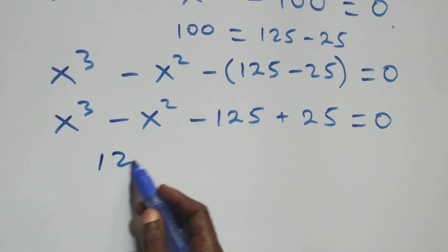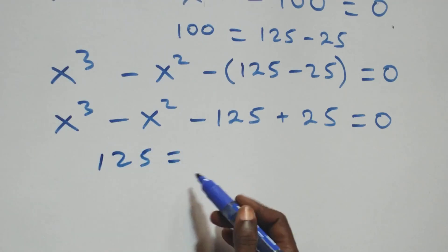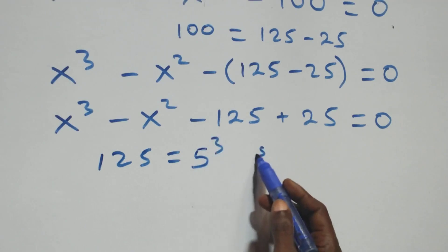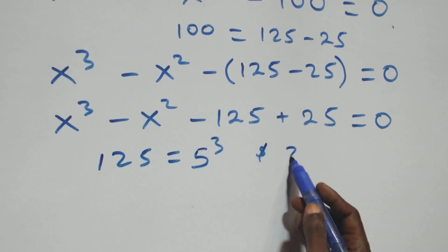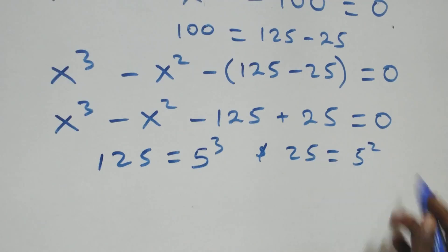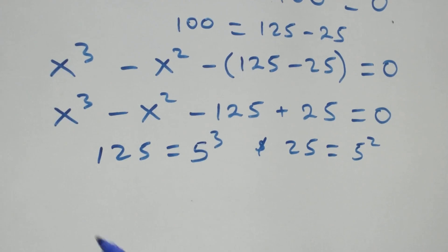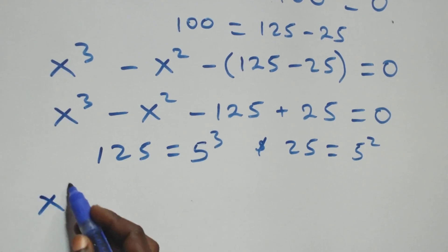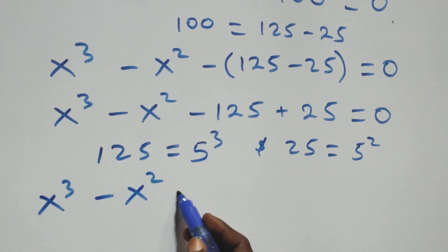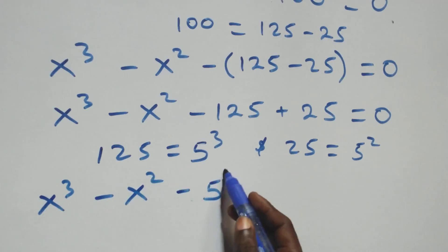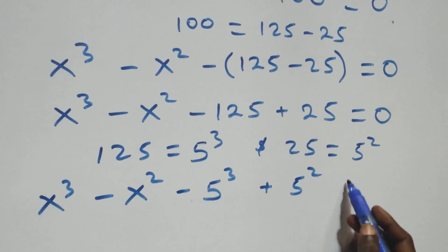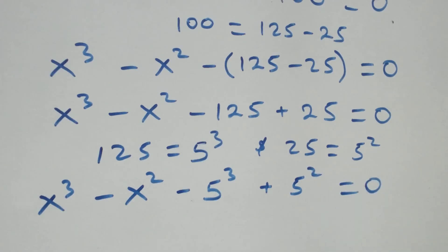Here, 125 can be written as 5 times 5 times 5, that is 5 cubed. And also 25 can be written as 5 times 5, that is 5 squared. So what we have becomes x cubed minus x squared, minus 5 cubed plus 5 squared, equals zero.